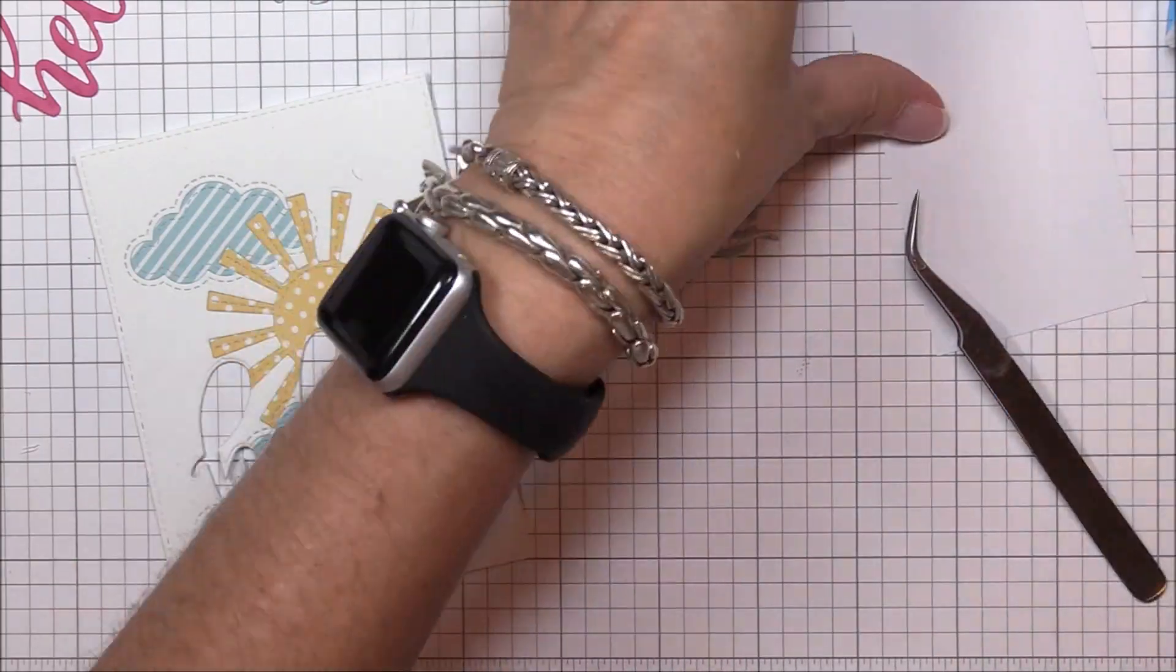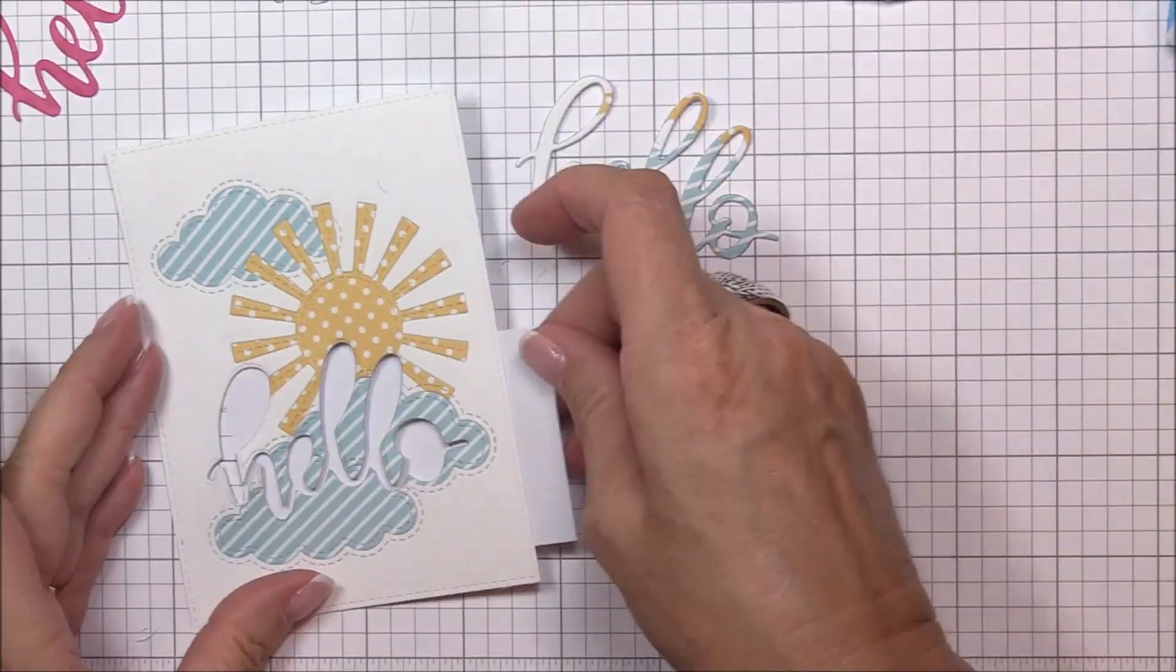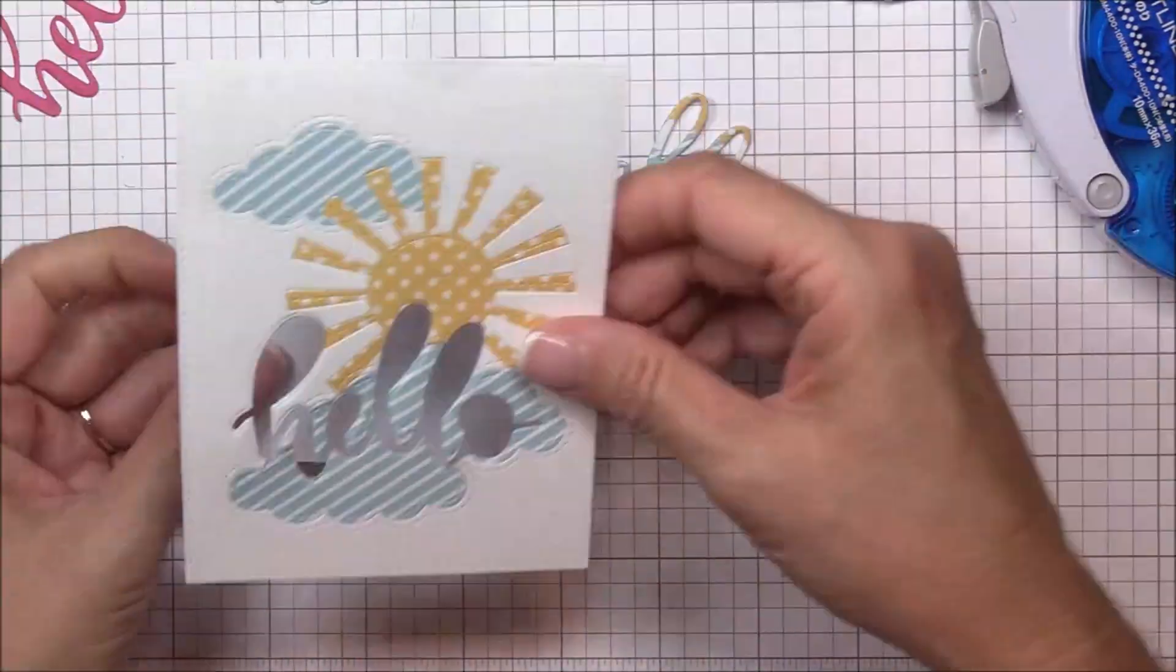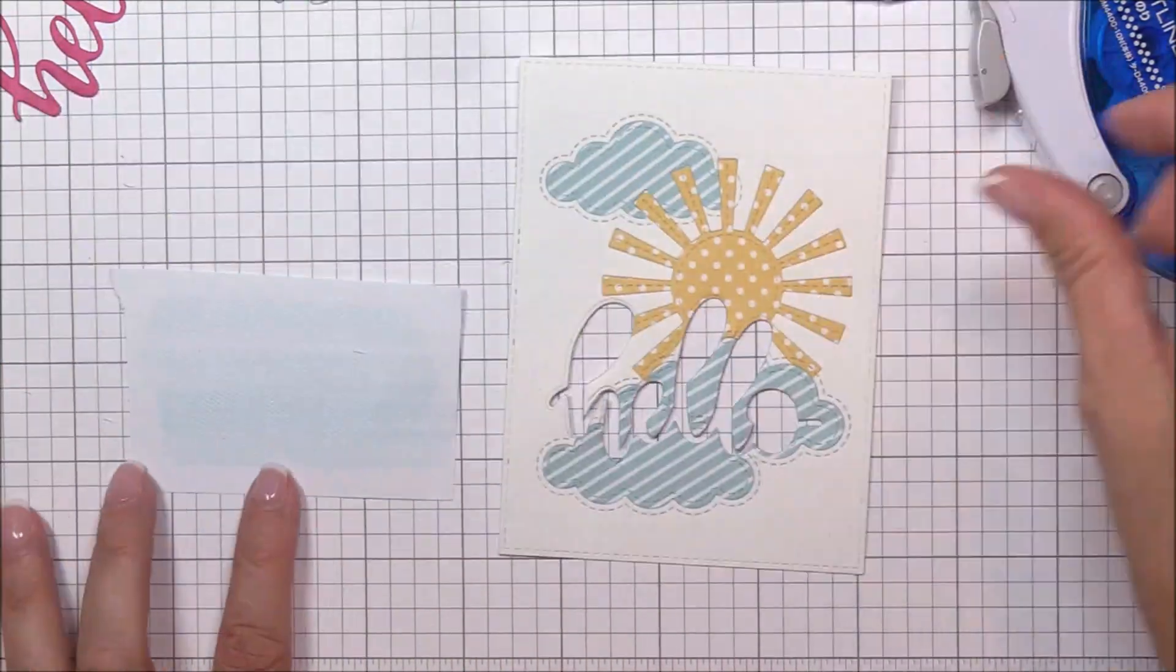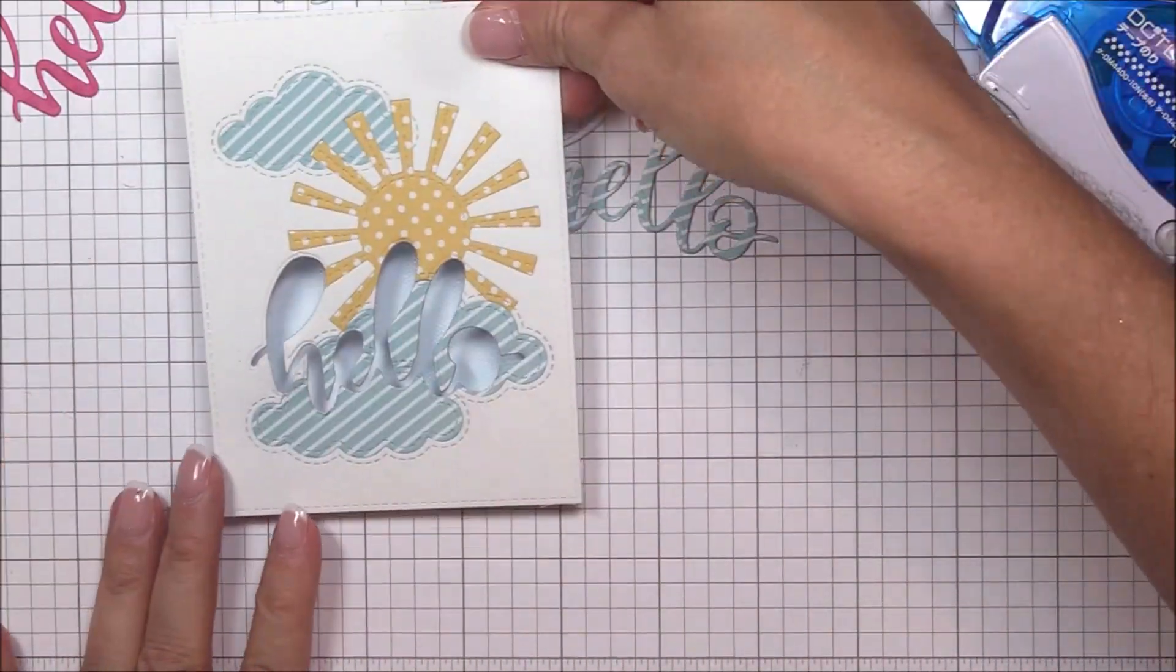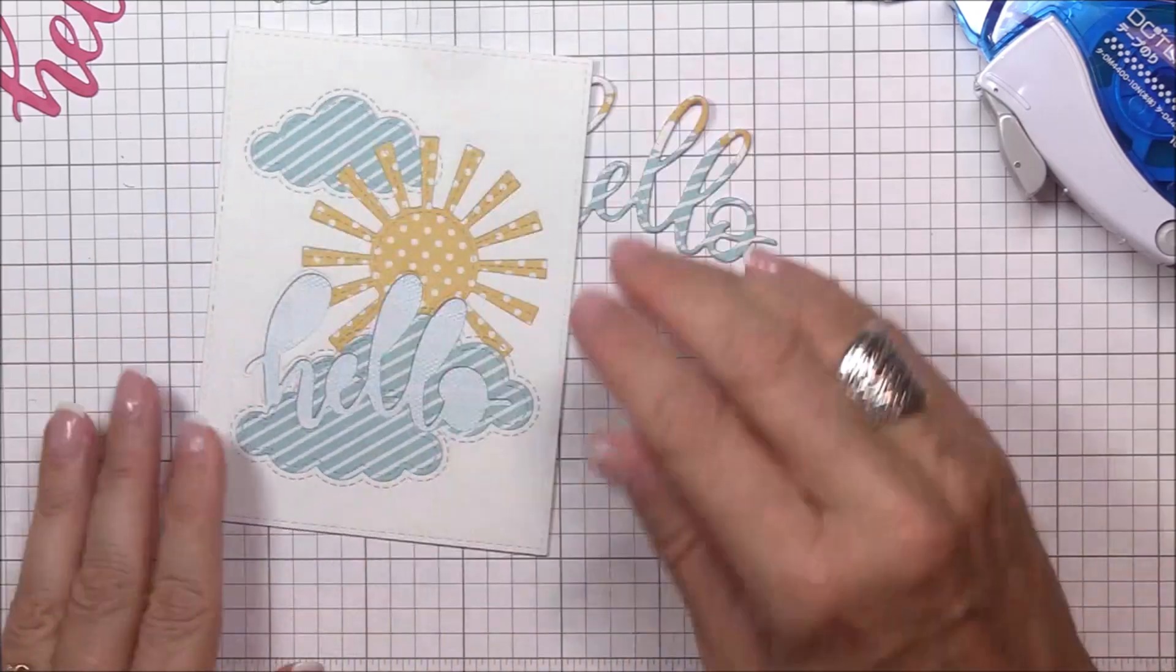Don't get me wrong, I love a good bit of dimension in my cards. In fact, I probably use more dimensional foam squares than anyone on the planet. But I love the illusion of depth and dimension that the inlaid die cutting technique gives you, and I love to save money on postage. So it's a win-win in my book.